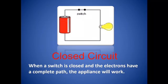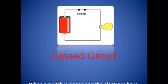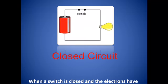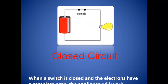A closed circuit is when a switch is closed and the electrons have a complete path. The appliance will work. As you notice, the wire is connected and the light bulb lights.